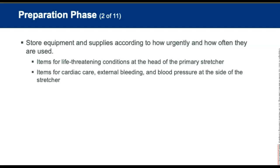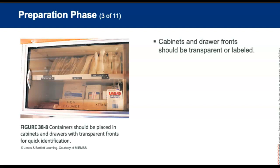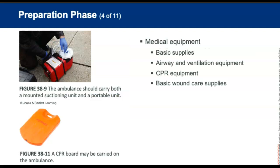Cabinets and drawers should have transparent fronts, be labeled, and open easily while closing securely. Medical equipment in the preparation phase includes basic supplies, personal protective equipment and sharps containers, airway and ventilation equipment, basic wound supplies, splinting, childbirth supplies, AED, patient transfer equipment, medications, communications, and other appropriate supplies.